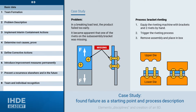The actual riveting process consists of three steps as shown on the right. Firstly, equip the riveting machine with the brackets and the two rivets. Secondly, trigger the riveting process. And thirdly, remove the riveted assembly and place it in a box.